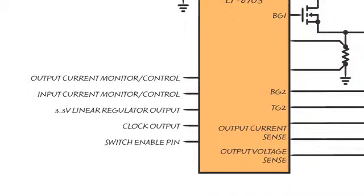The LT8705 includes a clock output pin. This pin generates a 180 degrees out-of-phase clock useful for synchronizing other DC-to-DC converters to the exact same frequency as the LT8705.